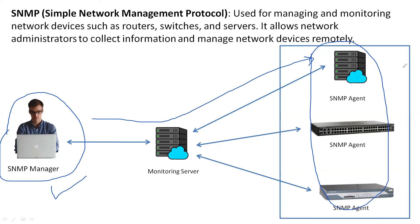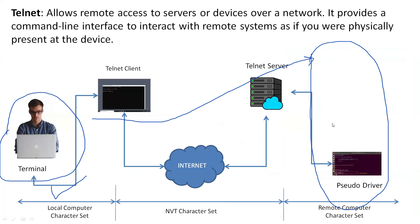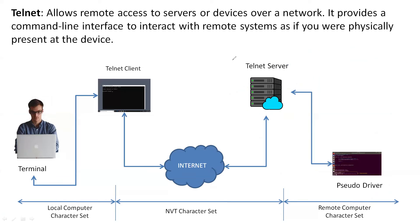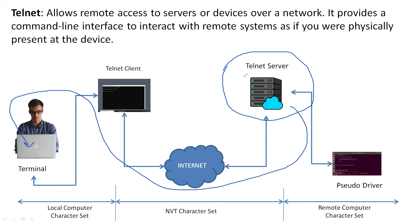The next protocol is Telnet. If I want to remotely access my server, that can be done using Telnet — I can remotely access the server without being physically present at the device. The problem with Telnet is that it works in plain text, whereas SSH works over encrypted text.